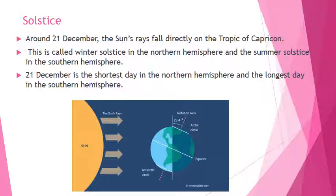Around 21st December, the sun's rays fall directly on the Tropic of Capricorn. This is called winter solstice in the northern hemisphere and the summer solstice in the southern hemisphere. 21st December is the shortest day in the northern hemisphere and the longest day in the southern hemisphere.